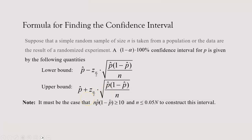Two things have to be satisfied in order to use these formulas — the distribution has to be approximately normal. Two properties must be met: n times p-hat times (1 minus p-hat) has to be greater than or equal to 10, and the sample size has to be less than or equal to 5% of the total population.